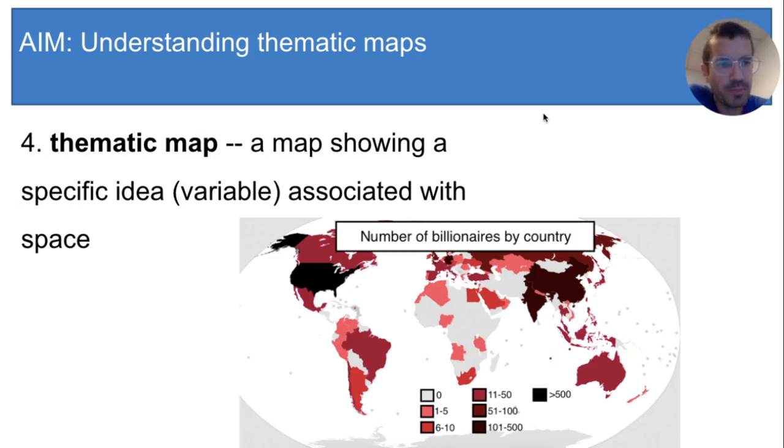Now look at this map. It shows the borders of all the countries too, but it adds something else, the number of billionaires that live in each country. So it's adding another idea or variable, and showing how that variable changes throughout space. So this is a thematic map.